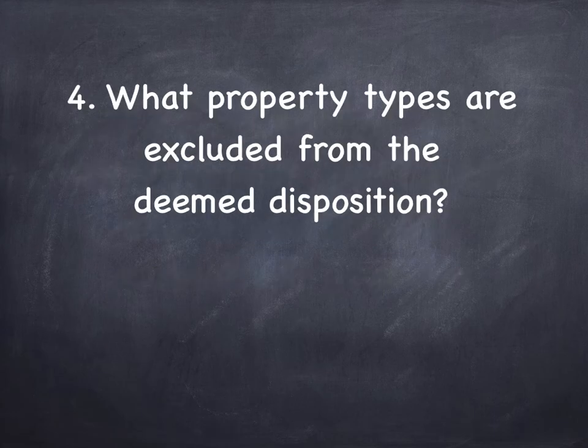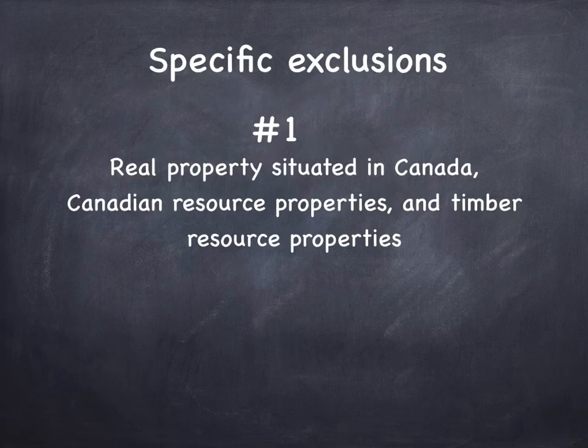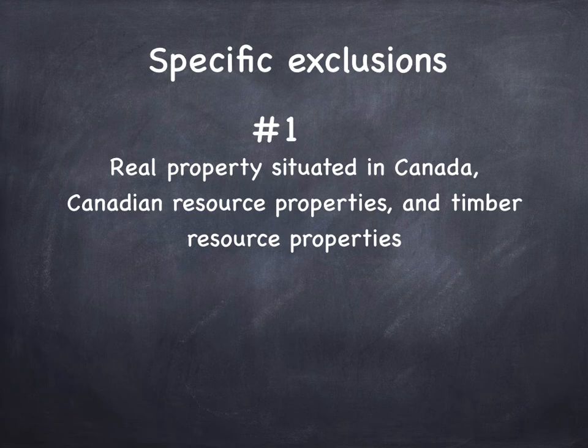What property types are actually excluded from the deemed disposition? There are four big ones. Number one: real property situated in Canada is excluded — sometimes referred to as immovable properties. That includes your real estate, your house, commercial buildings, and resource and timber properties. If it's real property in Canada, it's excluded.